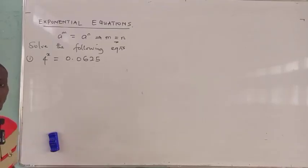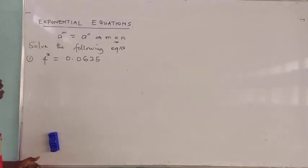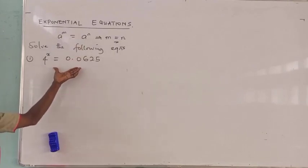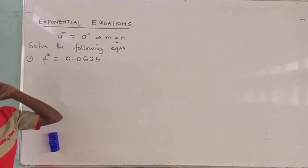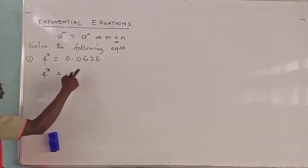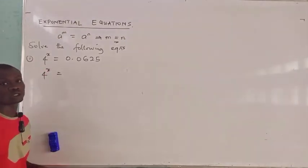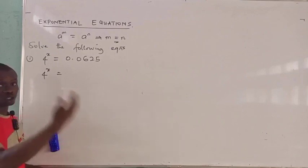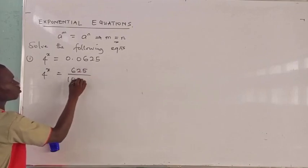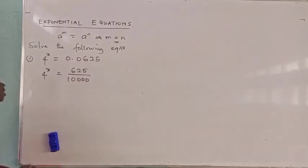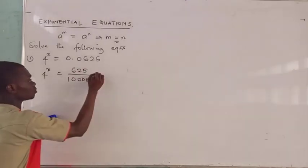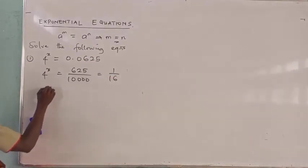When you have an equation of this form, your interest is to write both sides in index form where the bases will be the same. This particular number is a decimal, so the first thing to do is change it into a fraction. Doing that gives us 65 over 10,000 — four decimal places means four zeros — and when we reduce this to its simplest form, we get 1 over 16. So 4 raised to power x equals 1 over 16.